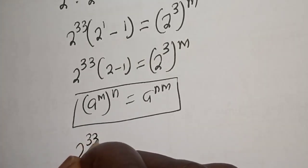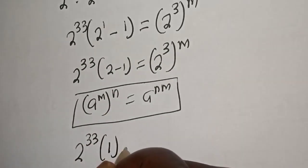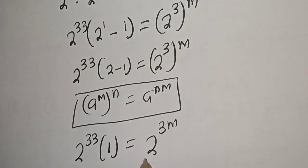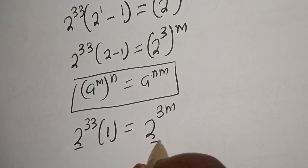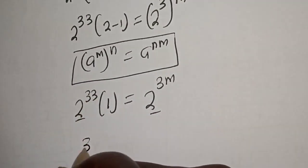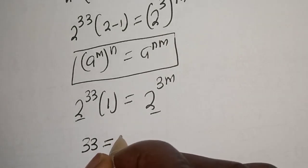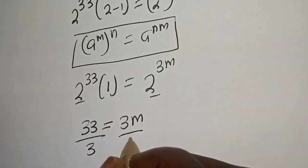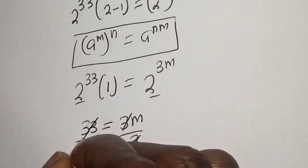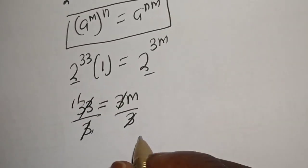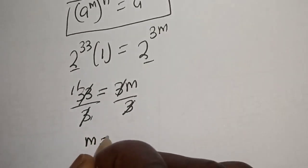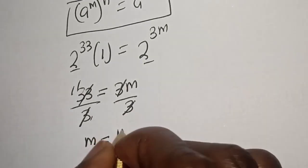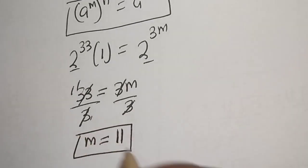2 raised to power 33 times bracket 2 minus 1, which equals 1, is equal to 2 raised to power 3 times m. Since they have the same base 2, we equate the exponents: 33 is equal to 3m. Dividing both sides by 3, m is equal to 11. This is the final answer.